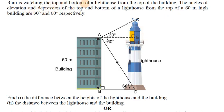Ram is watching the top and bottom of a lighthouse from the top of a 60-meter high building. The angles of elevation and depression of the top and bottom of the lighthouse are 30 degrees and 60 degrees respectively.